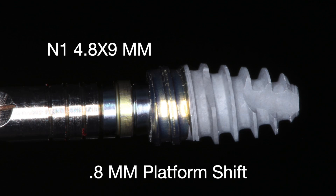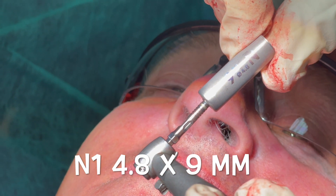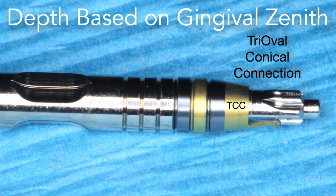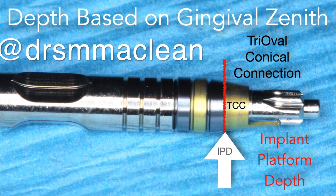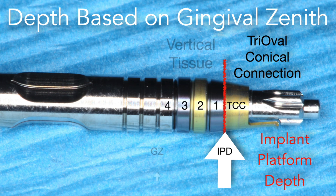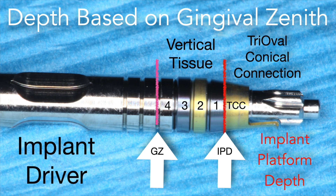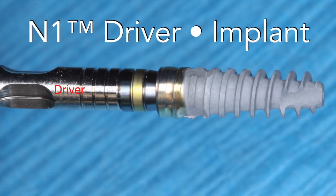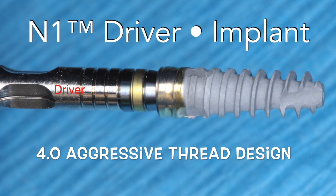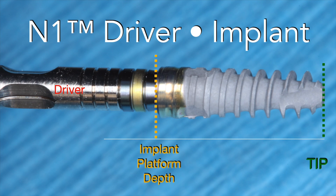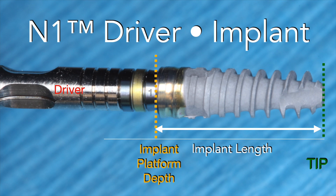We'll place the N1 implant — we're going to be using a 4.8 by 9 millimeter implant with a platform shift of 0.8 millimeters, so very generous and strong. The goal is to get this platform shift four millimeters from the surface of the tissue, giving you four millimeters of soft tissue. The tri-oval conical connection is marked in red, and above this we'll use the marks that go one, two, three, four, allowing you to know the depth of the tissue and to know exactly where the implant is relative to the soft tissue.